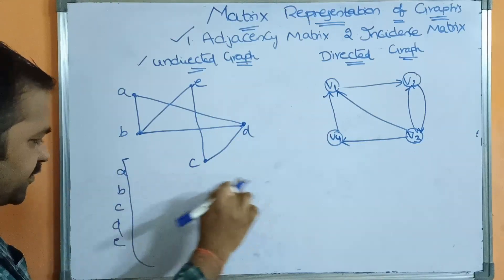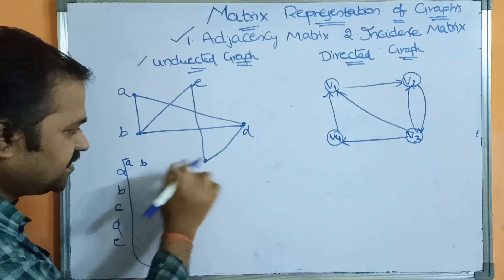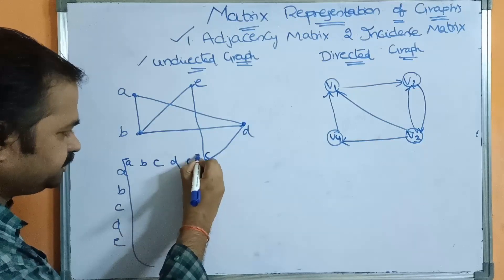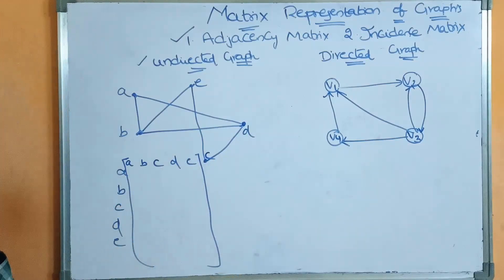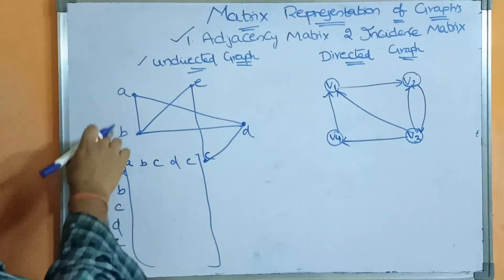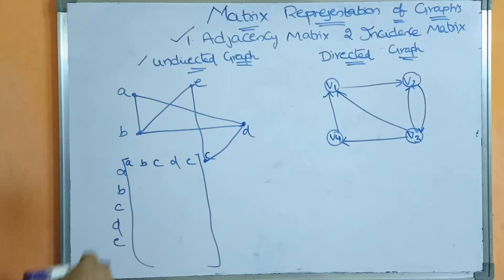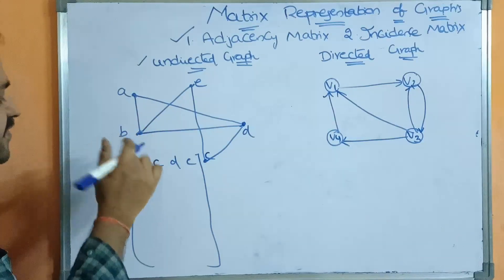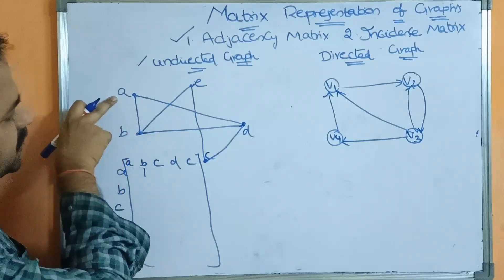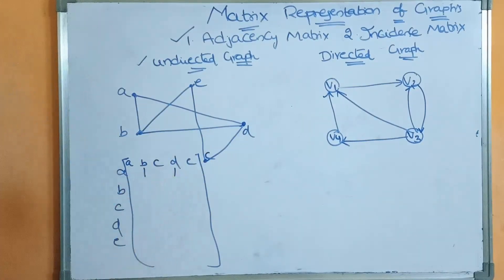So these are the row values and column values are also A, B, C, D, E. First let us see about vertex A and the edges associated with A. From A to B, we have an edge, so the corresponding value is 1. Next, from A to D, we have an edge, so the corresponding value is 1.